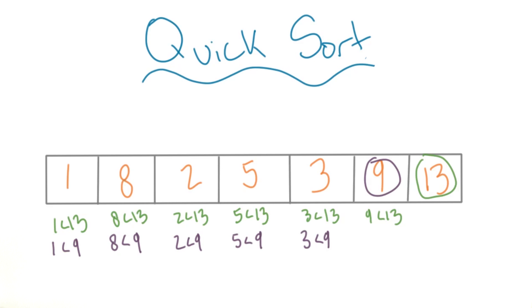But the real problem happens when the next value is also the largest. Again, we end up comparing to everything smaller than it and we're not saving any steps.